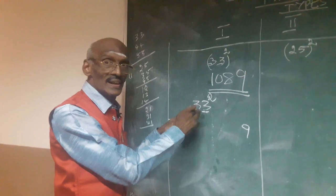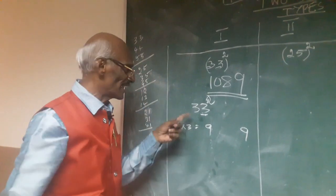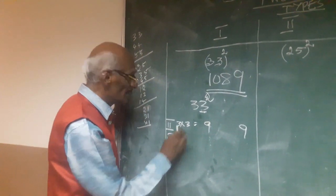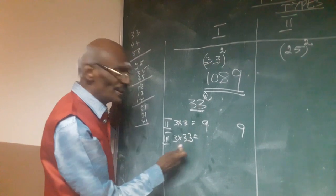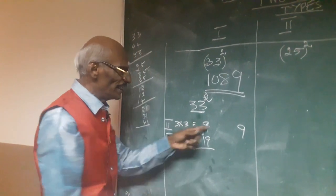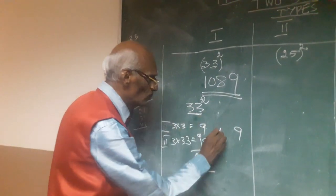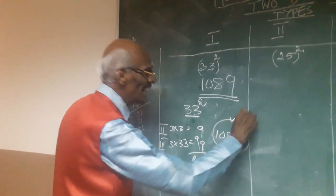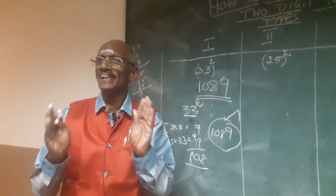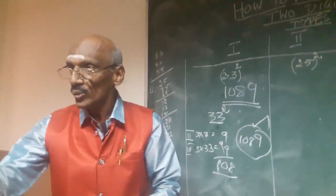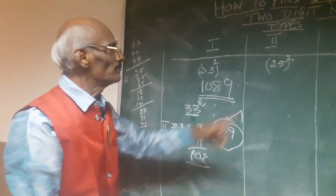Step two: multiply the first digit by the second digit — 3 into 3 equals 9. Step two is over. Step three: take the first digit and multiply by the two-digit number — 3 into 33 equals 99. Find the total: 99 plus 9 equals 108. Write this value here — 108. So what is the answer? 33 squared equals 1089. Anybody can find the answer within two seconds through continuous practice by memorizing these three steps.